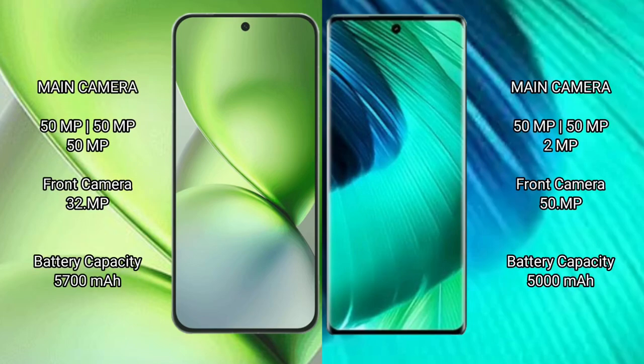The Vivo X200 Pro Mini features a triple rear camera setup with 50MP, 50MP, and 50MP lenses, and a 32MP front camera. The Vivo V30 also features a triple rear camera setup with 50MP, 50MP, and 2MP lenses, and a 50MP front camera.